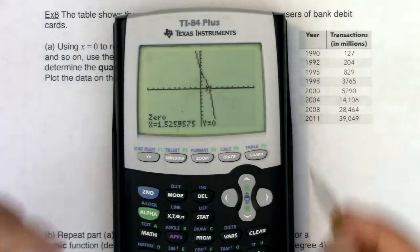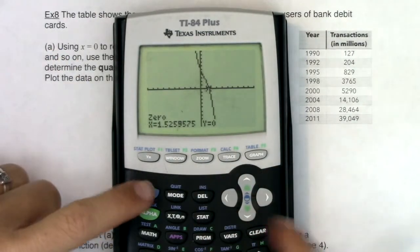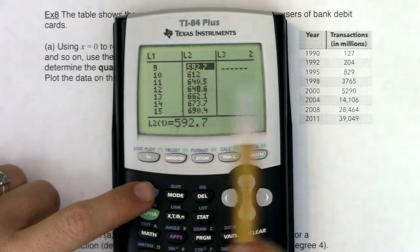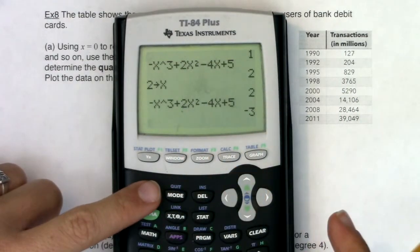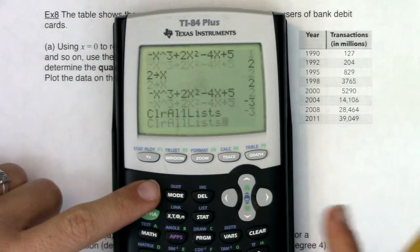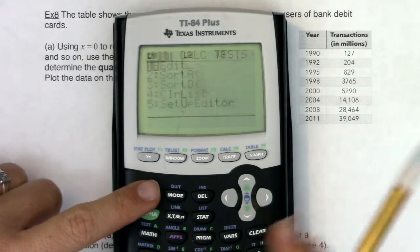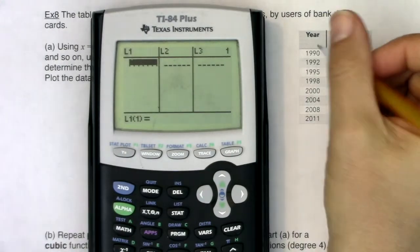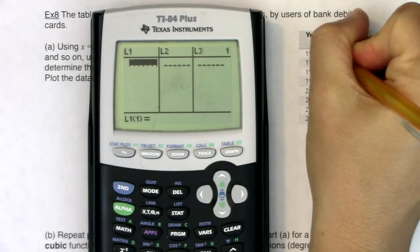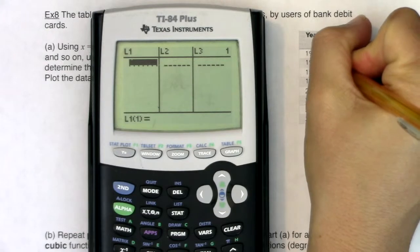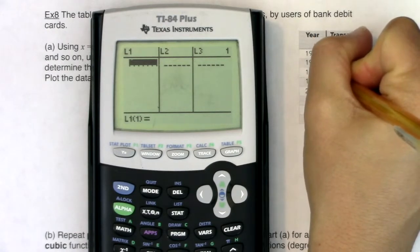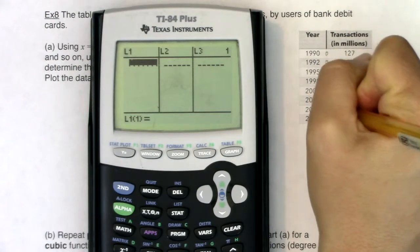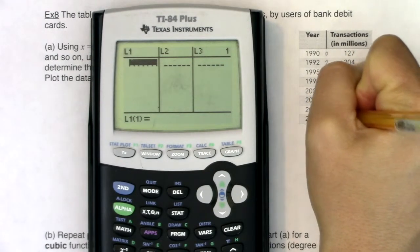Let's get this data into our list. If I hit stat and enter, I have some old data in here. I'm going to clear out my lists. Now I want to be careful - 1990 was year zero. I usually write my base year conversions here. This would be year zero, year two, five, eight, ten, fourteen, eighteen, and this would be 21.